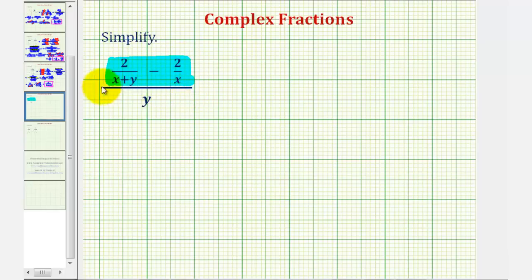And then since a fraction bar represents division, we'll then divide the difference by y, which we can think of as y over one. So instead of dividing, we'll end up multiplying by the reciprocal, or one over y.